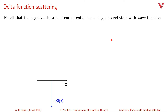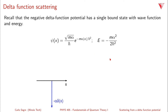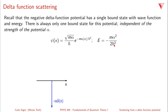We had a negative delta function potential with a single bound state, with a wave function psi(x) = sqrt(m·alpha / h-bar) · e^(-m·alpha·|x| / h-bar²), where the potential is minus alpha times delta(x). The energy of that bound state is -m·alpha² / (2·h-bar²). Remember, there is always only one bound state for this potential, independent of the strength alpha.